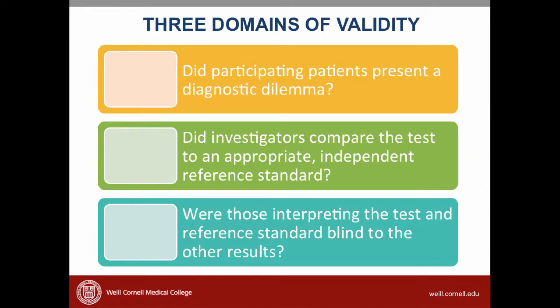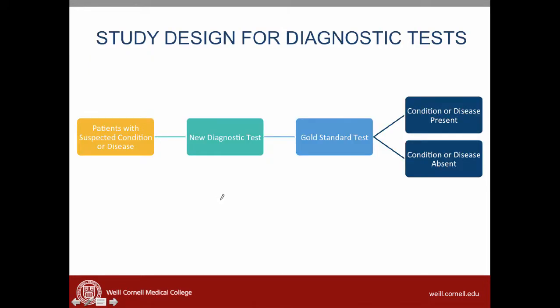The next set of questions asks: did investigators compare the tests to an appropriate independent reference standard? Let's go back to our study design for diagnostic tests. In the best studies that look at the characteristics of a new diagnostic test, the researchers need to compare the new test with a gold standard test, or the best test available. This validity question ensures we have a way of knowing whether a condition is present or absent using the gold standard. Let's answer a few specific sub-questions.